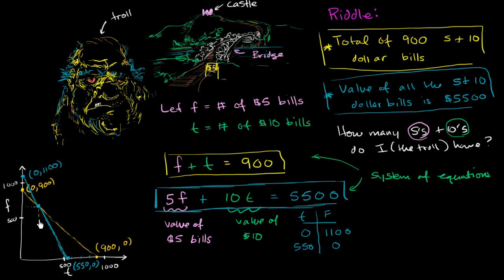When we do it right over here, I'm going to eyeball it. If we look at it right over here, it looks like we have about 700 fives, and it looks like we have about 200 tens. And this is based on my really rough graph, but let's see if that worked.